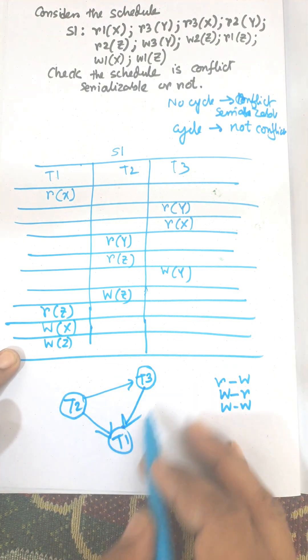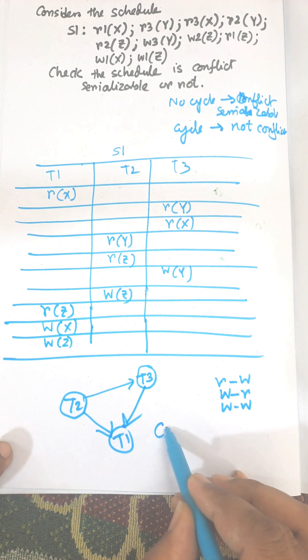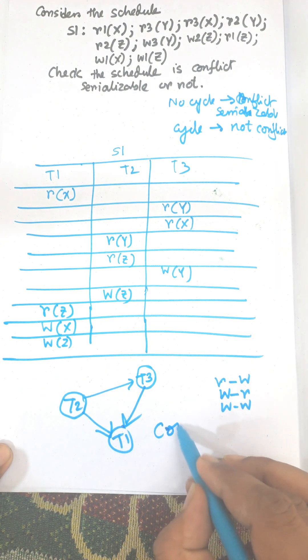Here there is no cycle. So there is no cycle. It is no cycle means conflict serializable. So it is conflict serializable.